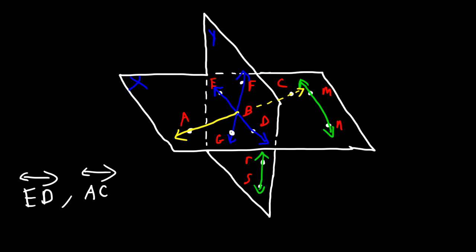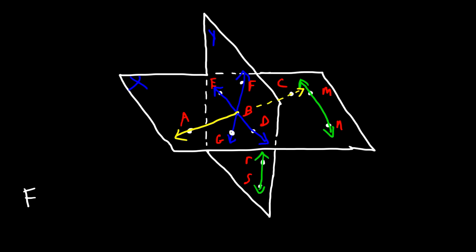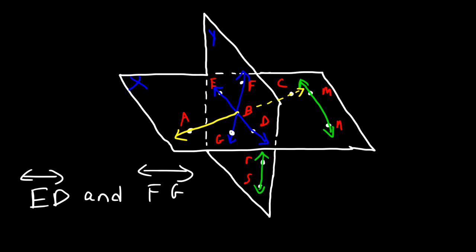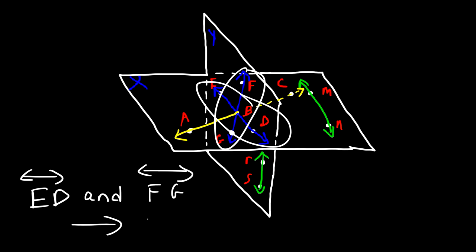So these two lines are found in plane X — X is the answer. What about line ED and line FG? ED is found in both planes, but FG is found in plane Y and not X. So these two lines determine plane Y.